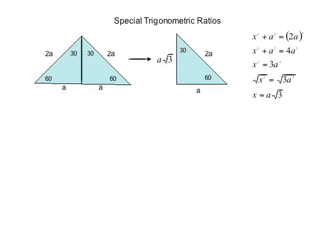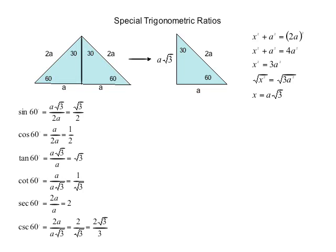Taking the square root of both sides we get x = a√3. So now we have all three sides of our triangle in terms of a, with 30° and 60° angles. We can find all six ratios for 60°. Sine of 60° is a√3 over 2a, which reduces to √3/2. The cosine of 60° is a over 2a, which reduces to 1/2. The tangent of 60° is a√3 over a, so the a's cancel and we get √3.